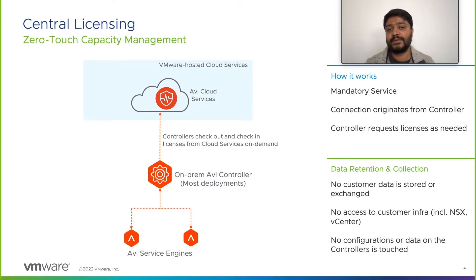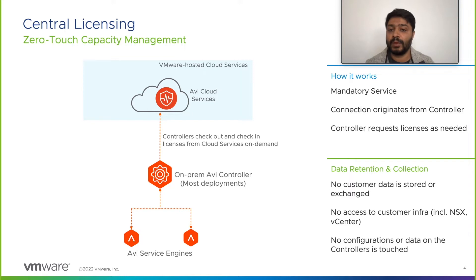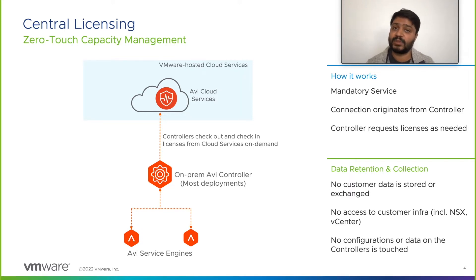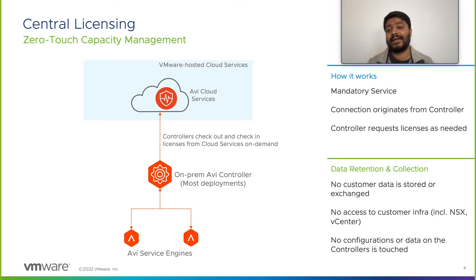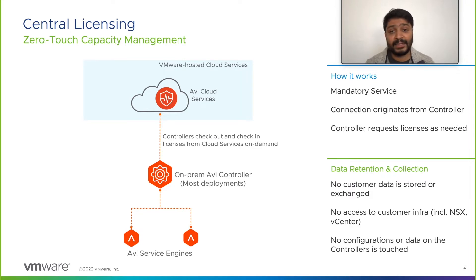The focus of today's video is on central licensing service. Central licensing service truly enables a zero-touch capacity management experience for all registered Avi controller deployments with the Avi Cloud Services platform. Central licensing is the only mandatory service that requires to be enabled when an Avi with Cloud Services subscription is purchased. It talks to the VMware Cloud Services platform to gather all purchased subscription information as well as trials that are enabled, and hosts a global capacity pool for customers. Central licensing is fully multi-tenant and all customer subscriptions are fully isolated.